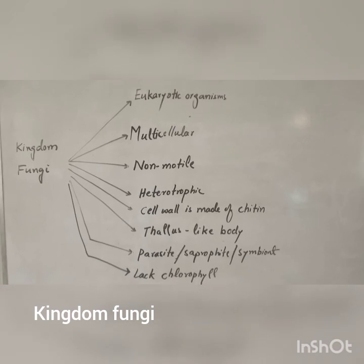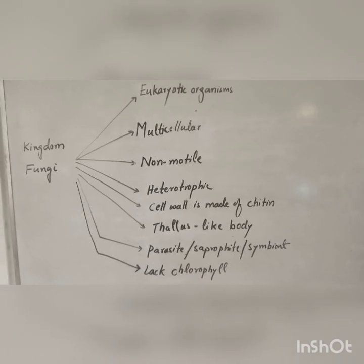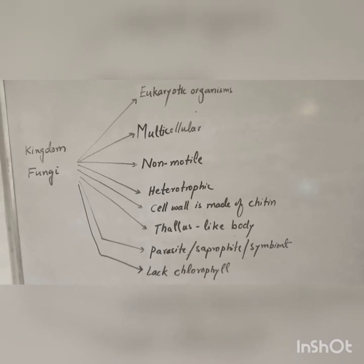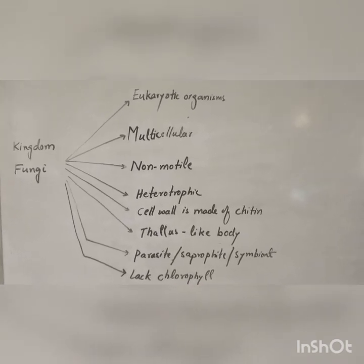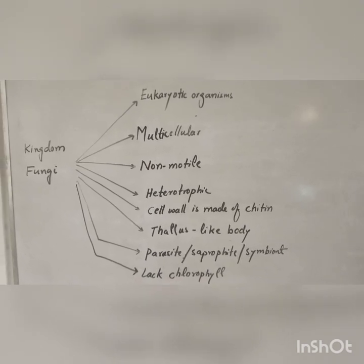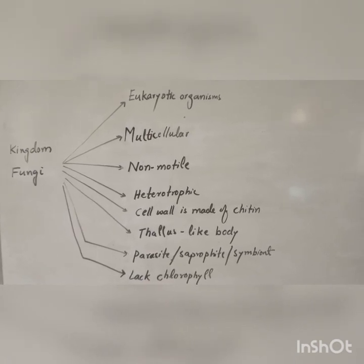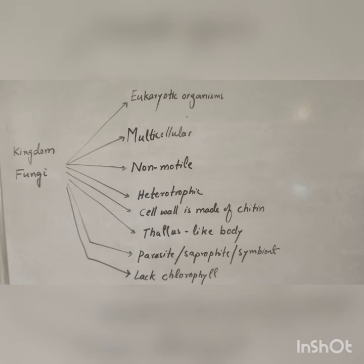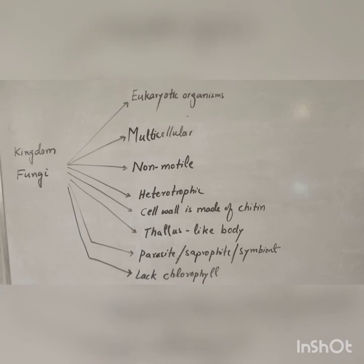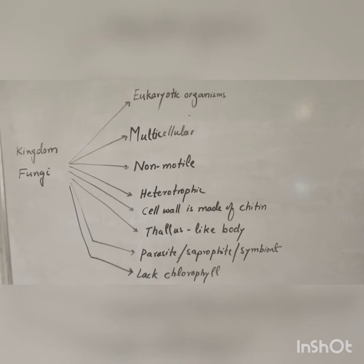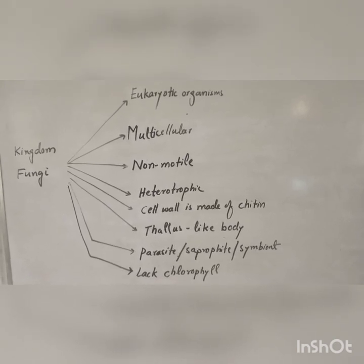The third kingdom is Kingdom Fungi. Kingdom Fungi includes organisms which have both plant-like and animal-like characters. They are all eukaryotes and multicellular organisms. They are all non-motile and heterotrophic, obtaining nutrients by absorption. Their cell wall is made of chitin.